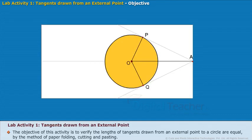The objective of this activity is to verify the lengths of tangents drawn from an external point to a circle are equal, by the method of paper folding, cutting and pasting.